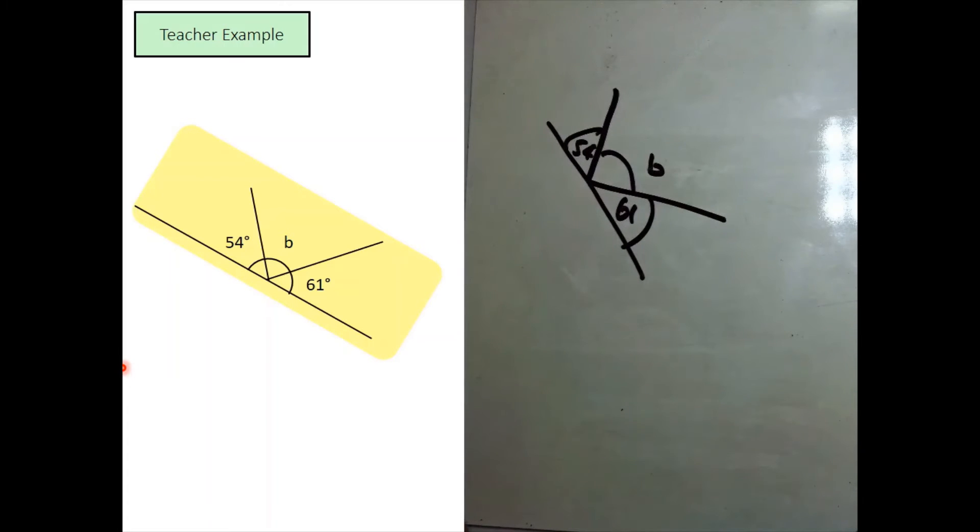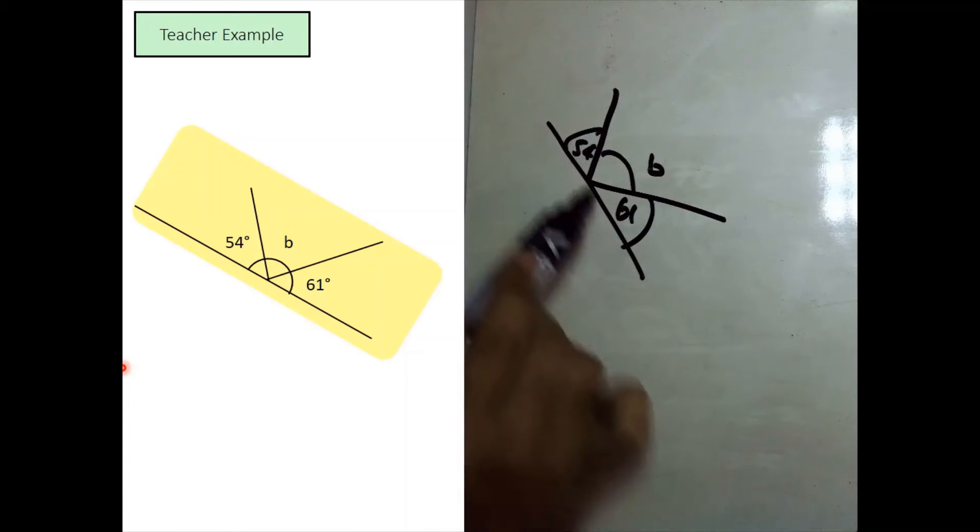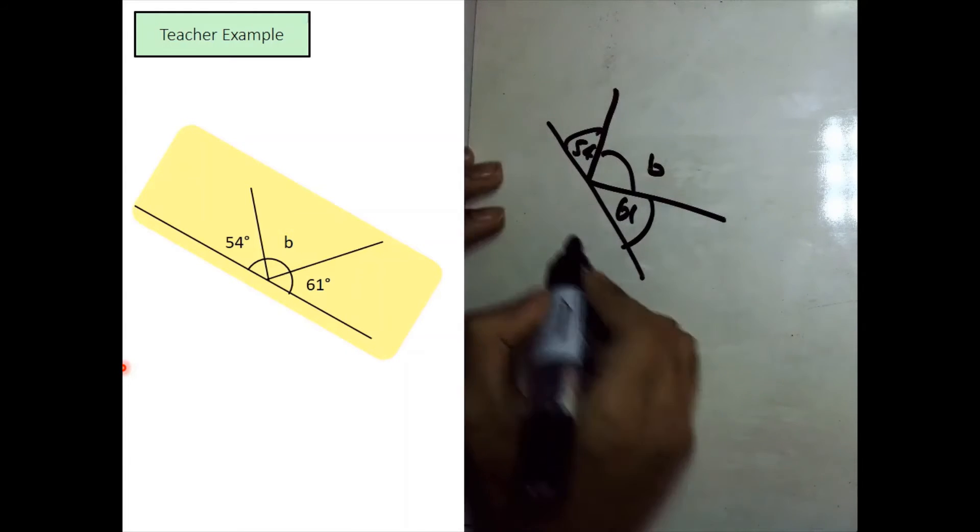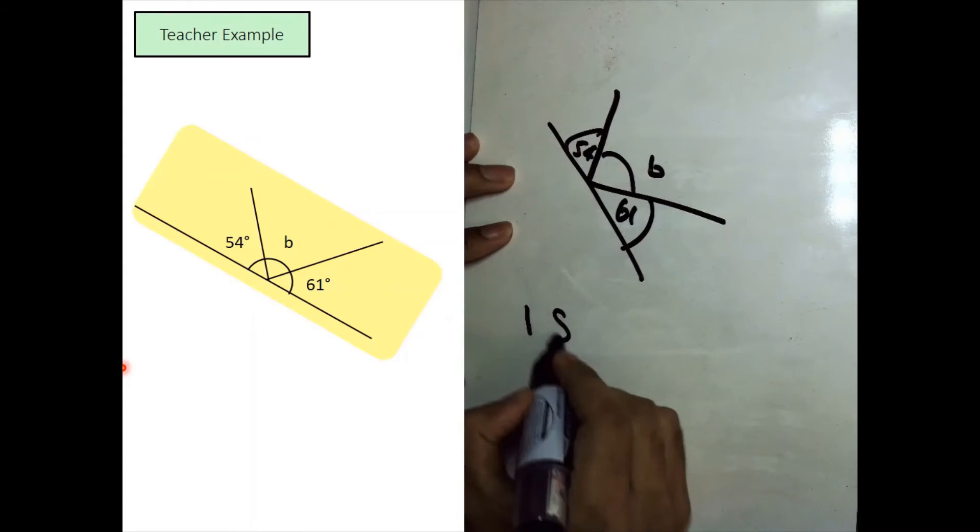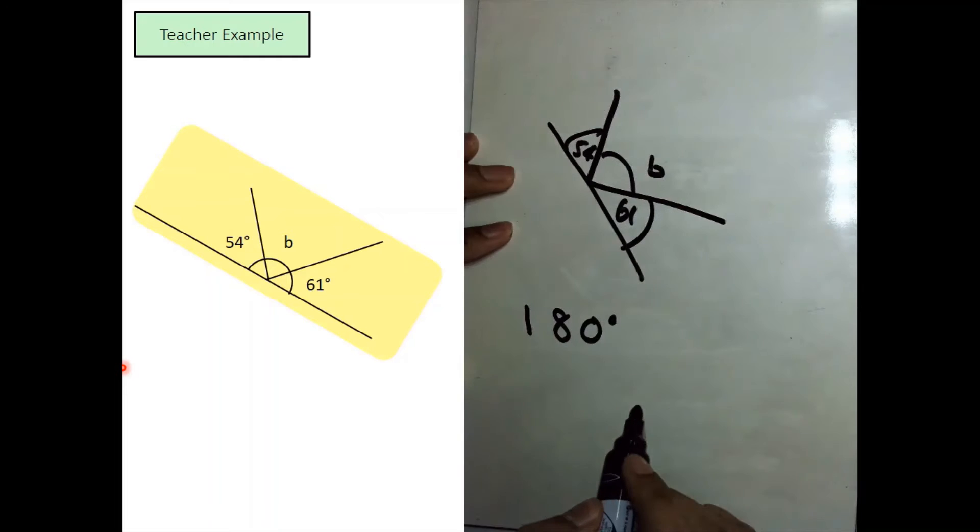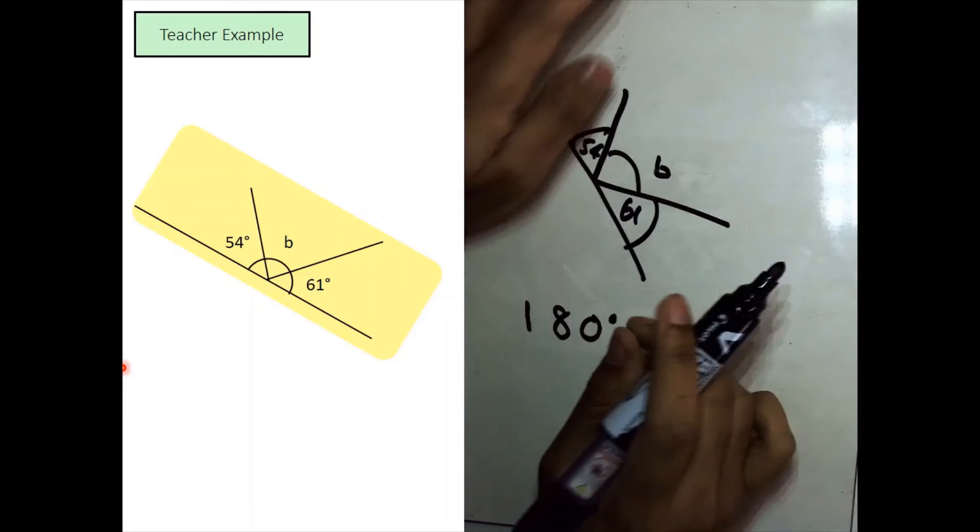We want just B, but there are two angles over here that are stopping us from getting B. We know that this is a straight line, first of all. So, 180 degrees is going to be the total of this line. Now, instead of just taking away one angle now, we have to take away another angle as well.